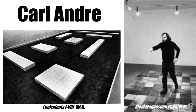Carl Andre continues to push the boundaries between the viewer and the art. In his Equivalents 1 through 8, he places bricks directly on the floor and asks the viewer to maneuver around them in the space. Taking this idea even further, in his piece Steel Magnesium Plane, he invites the viewer to step directly on the work itself, completely breaking the division between the viewer and the artwork. Lastly, Andre's Equivalents series embodies Morris' idea of gestalt — the idea of being able to take in a form all at once because of its simplicity — because whether stacked or disassembled, the bricks have the same immediate, naturally comprehensible impression, or gestalt.